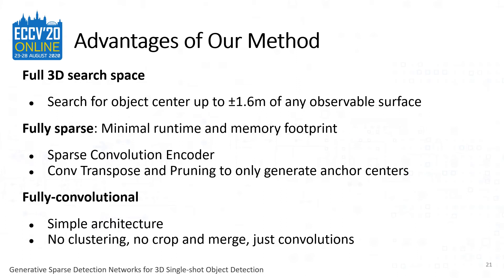Our proposed method has several advantages. First, our method searches the full 3D space beyond the input observable surface. Practically, we generate object centers within plus or minus 1.6 meters of any observable surface, which is reasonable in most cases. Second, our method is fully sparse throughout the encoder and decoder, maintaining minimal runtime and memory footprint. Third, our method is fully convolutional — a simple architecture that does not require any post-processing such as clustering or heuristic crop and merge.